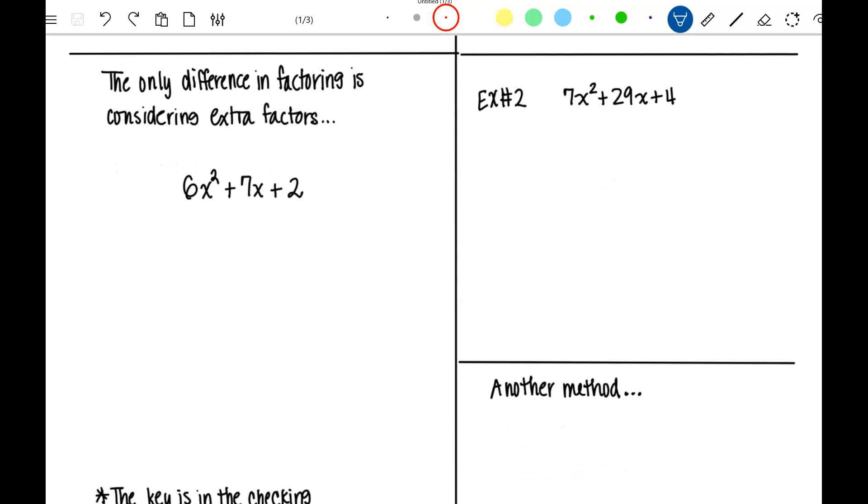Okay, so for example, I know since this is a trinomial, it's going to factor into two binomials. The difference is, 6x squared could be 1x times 6x, or it could be 2x times 3x.